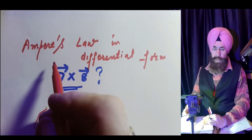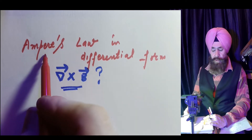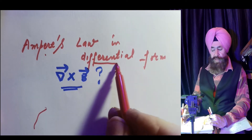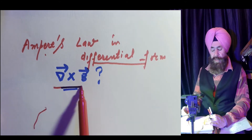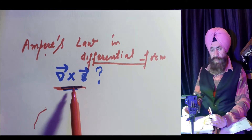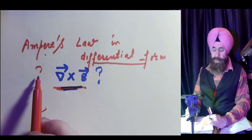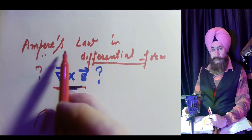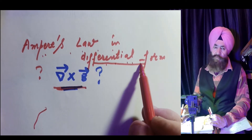My dear friends, today my topic is: what is Ampere's law in the differential form? Or I can say, what is the meaning of the curl of a magnetic field? Curl of magnetic field, or Ampere's law in the differential form?